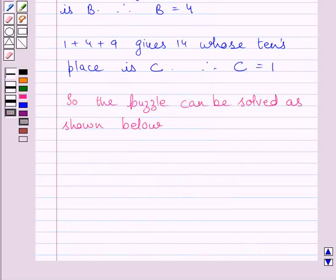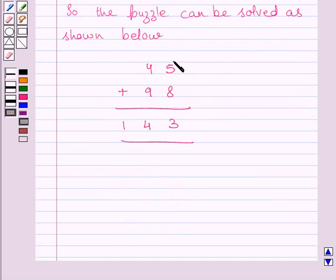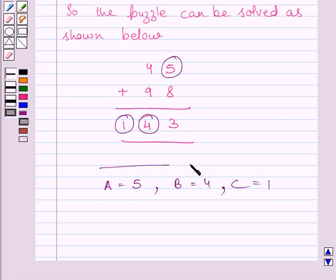So the given puzzle can be solved as shown below. So our final answer is value of A is 5, value of B is 4 and value of C is 1. This is our required answer.